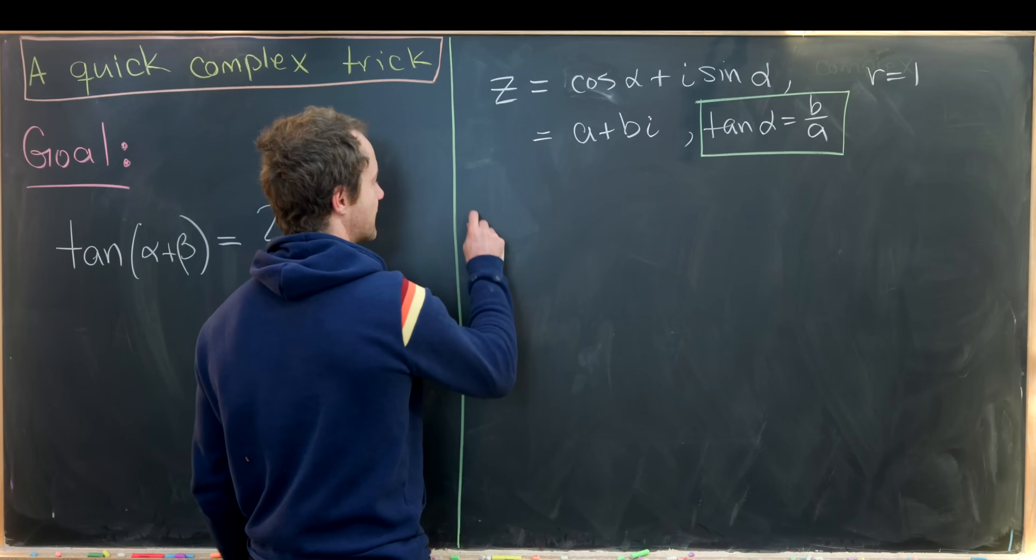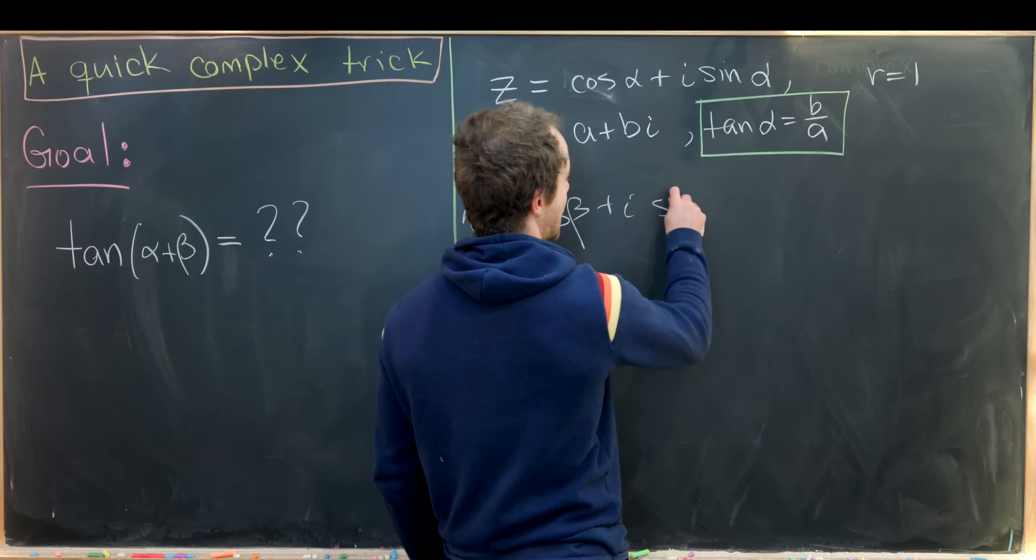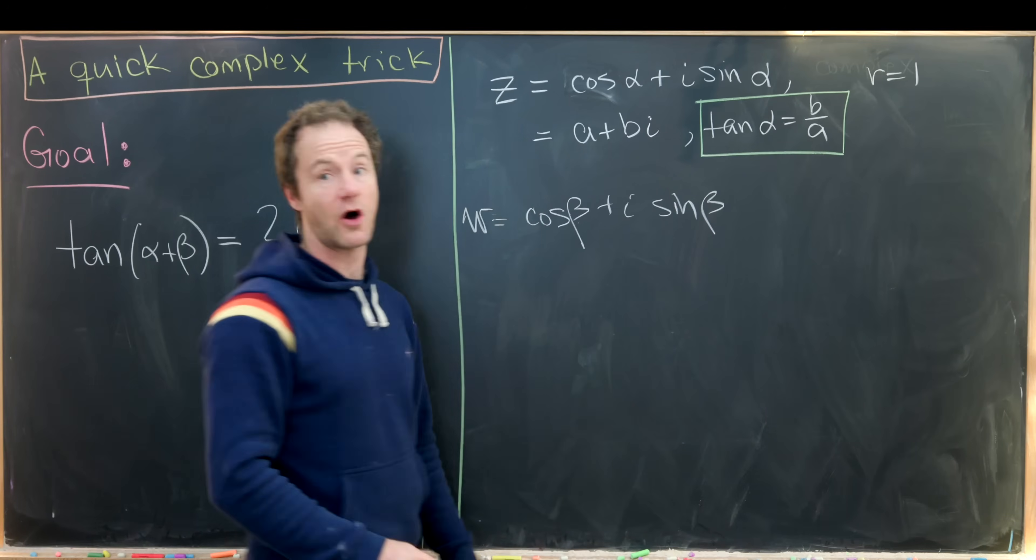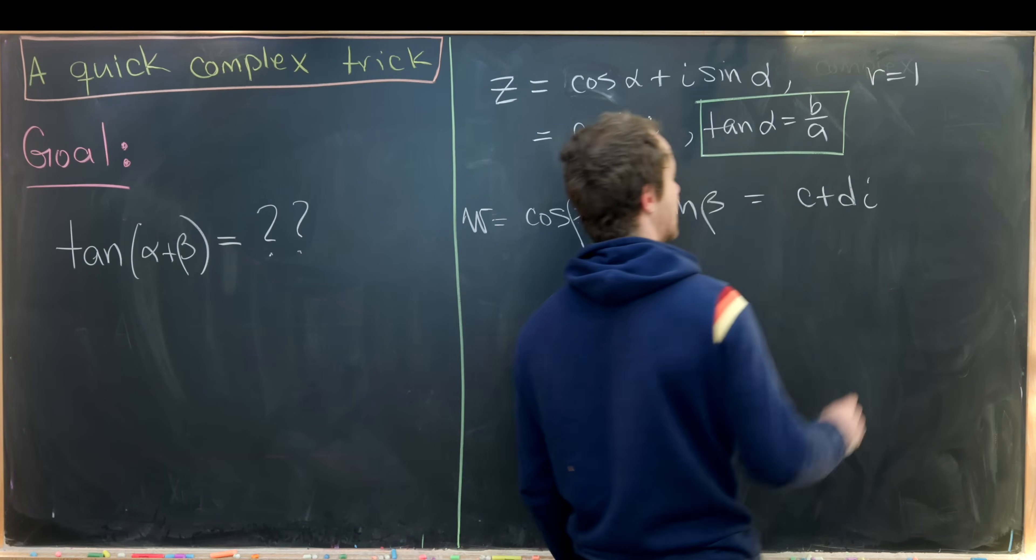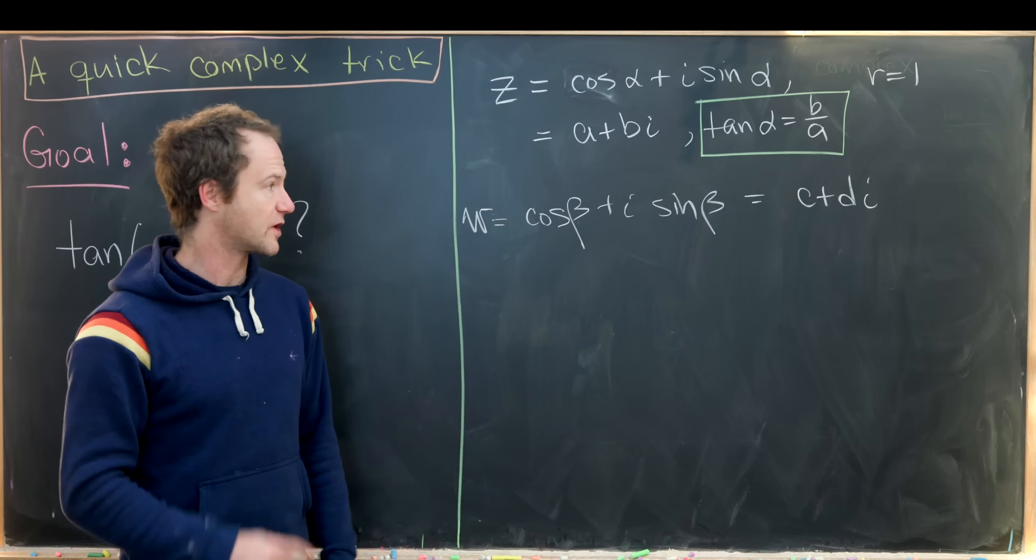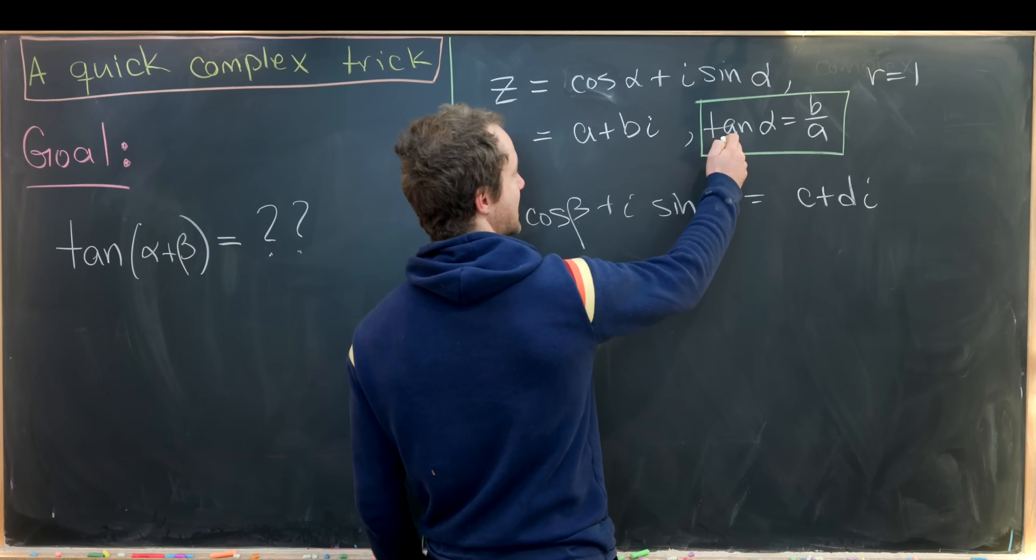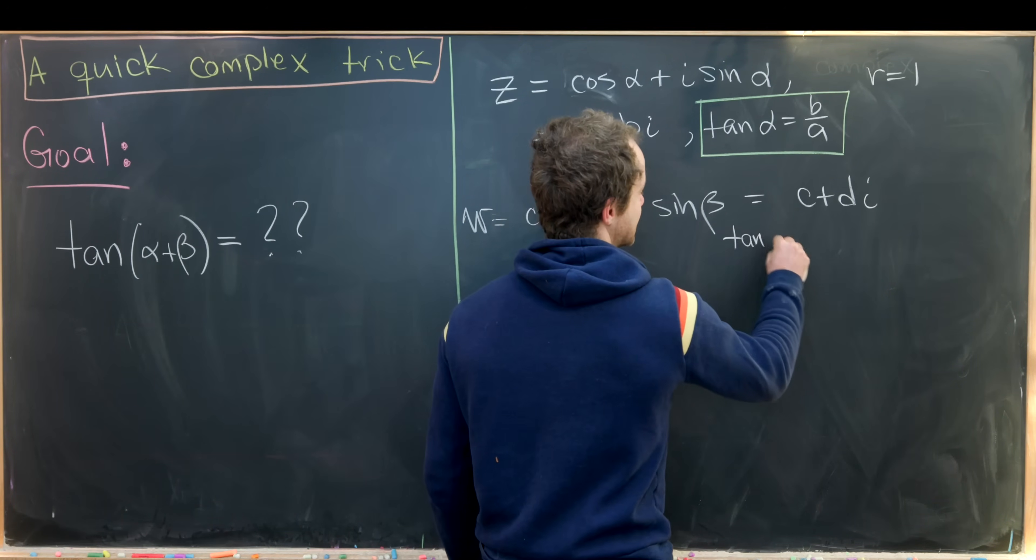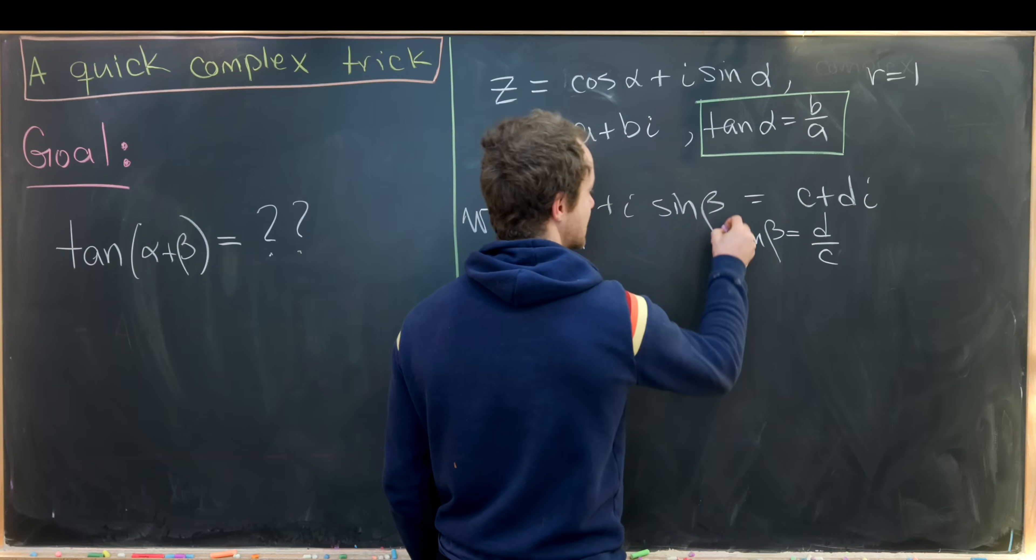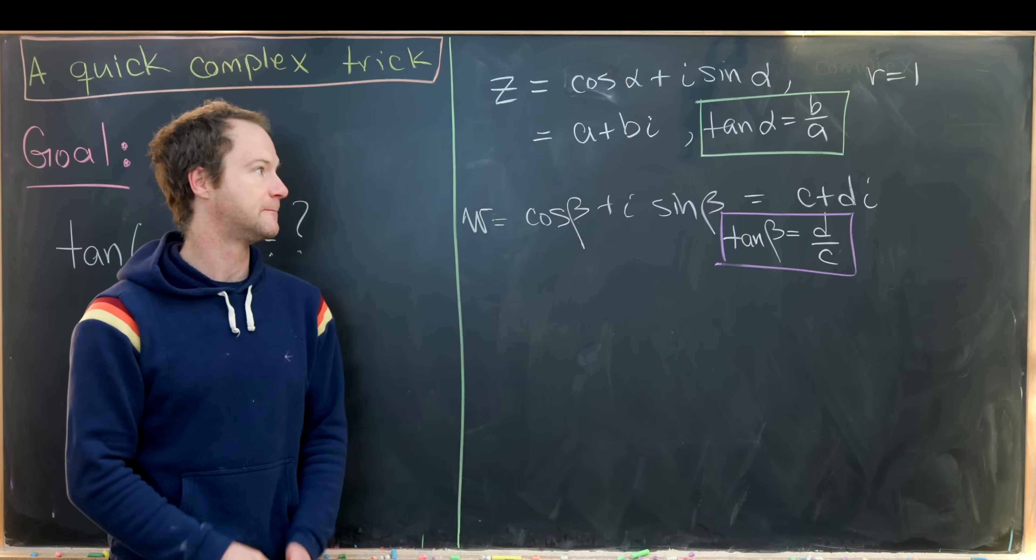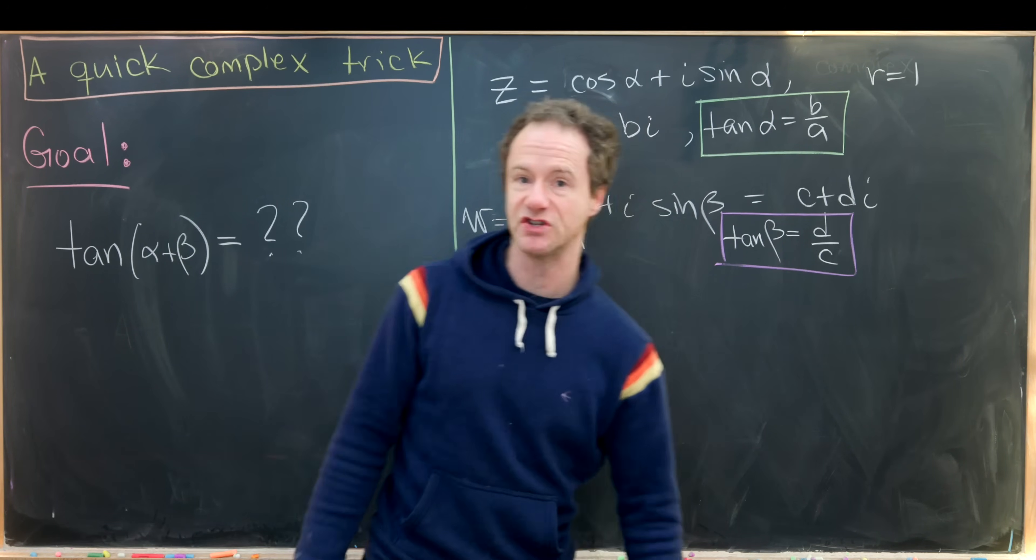Now we'll do the same thing for another complex number w. So let's set w equal to cosine beta plus i sine beta. Again, the r value is one. And then we can expand this in rectangular form as c plus di, where c and d are just the appropriate real numbers. In fact, c is cosine beta and d is sine beta. Now we can make a similar observation. We'll see that the tangent of beta is equal to d over c. The tangent of the argument is always the imaginary part divided by the real part. So now we've got something in terms of tangent alpha and tangent beta. And our goal is for something in terms of tangent alpha plus beta.